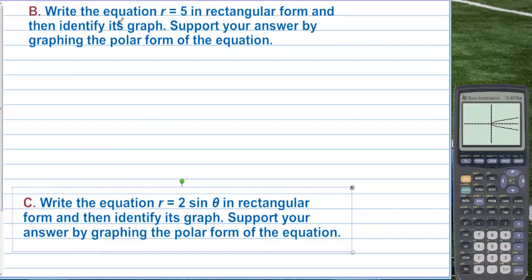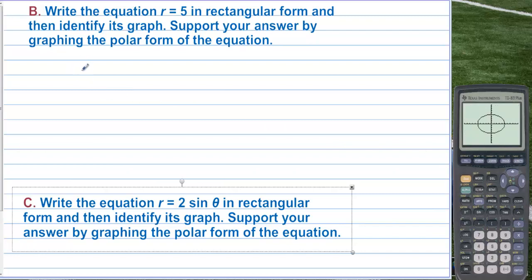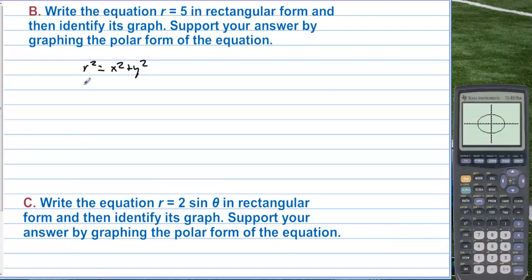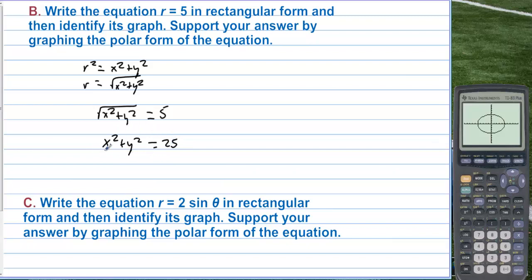Write the equation r = 5 in rectangular form and identify its graph. This is a circle. Since r = √(x² + y²), we can replace r with √(x² + y²) = 5. Squaring both sides gives x² + y² = 25, which is the equation of a circle with radius 5 centered at (0, 0).